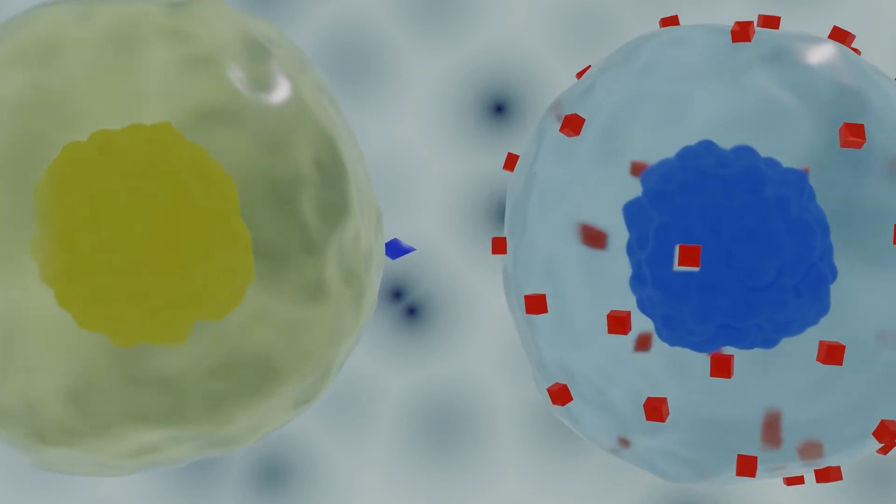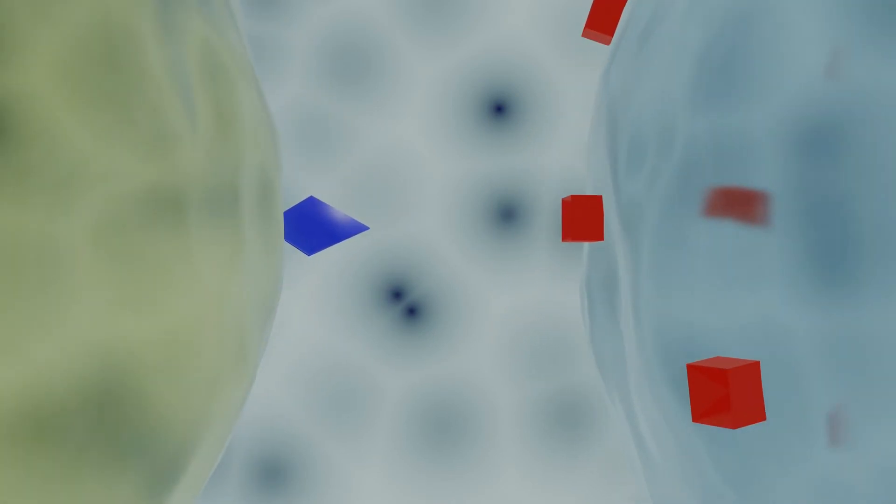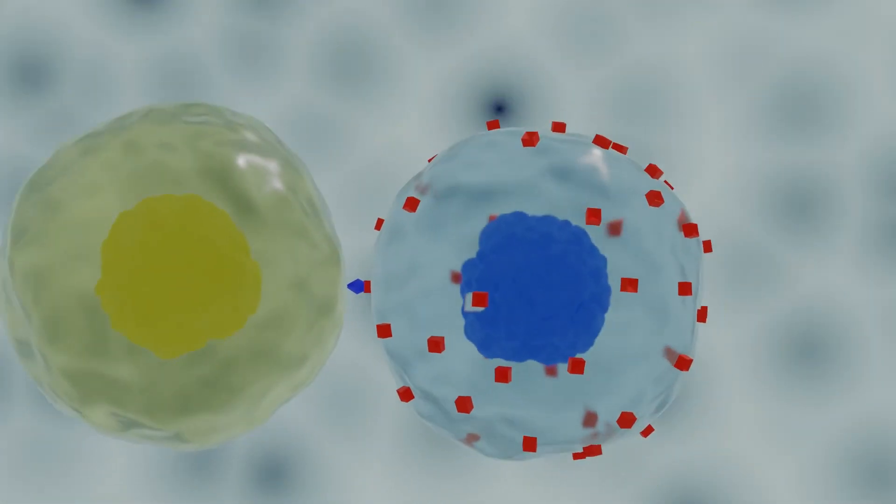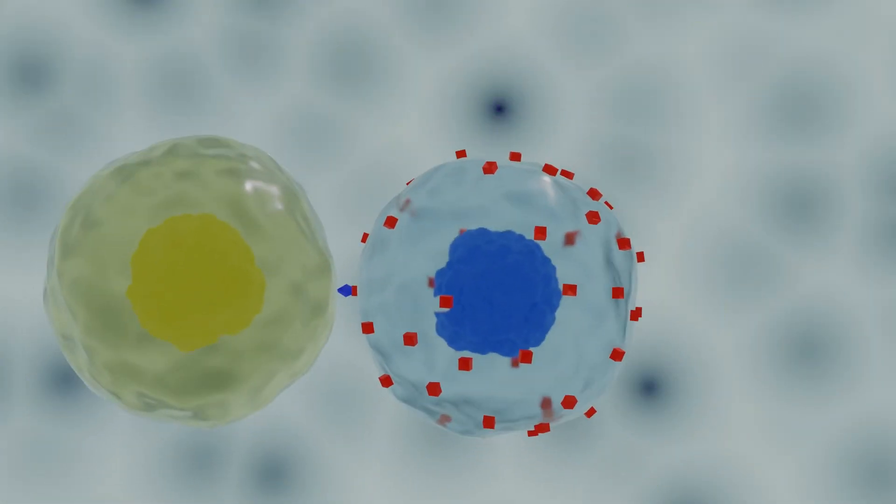The Th2 cell has proteins on its surface that are complementary to the allergen, and so the Th2 cell recognises the allergen presented to it and in response produces a chemical called interleukin-4. And now we come to the B cells.